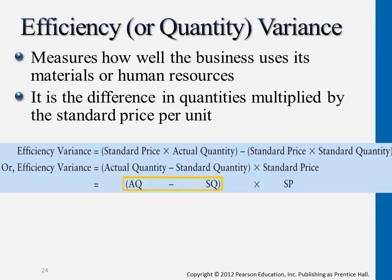So one part of the flexible budget variance is related to unit cost price: did you spend more on producing certain products, or pay more to the supplier? The other part is related to quantity: did you use more volume of certain materials than expected, or less? Any differences in quantity — we find the difference, then multiply by the standard price per unit to figure out the efficiency variance.